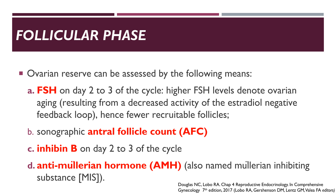Inhibin B levels actually provide an early indicator of the number of recruited follicles, whereas AMH is a secretory product of the granulosa cells in the pre-antral and small antral follicles. Studies have indicated that in the treatment of infertility, AMH and AFC offer the most useful assessment for ovarian reserve.